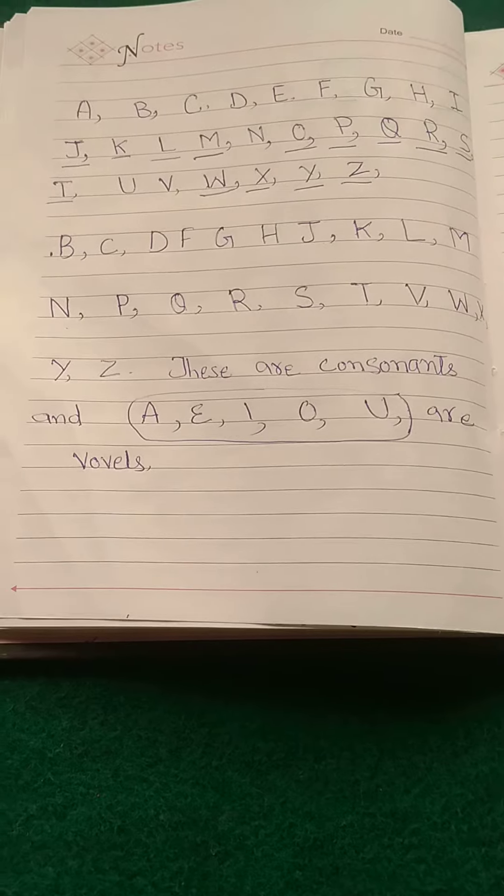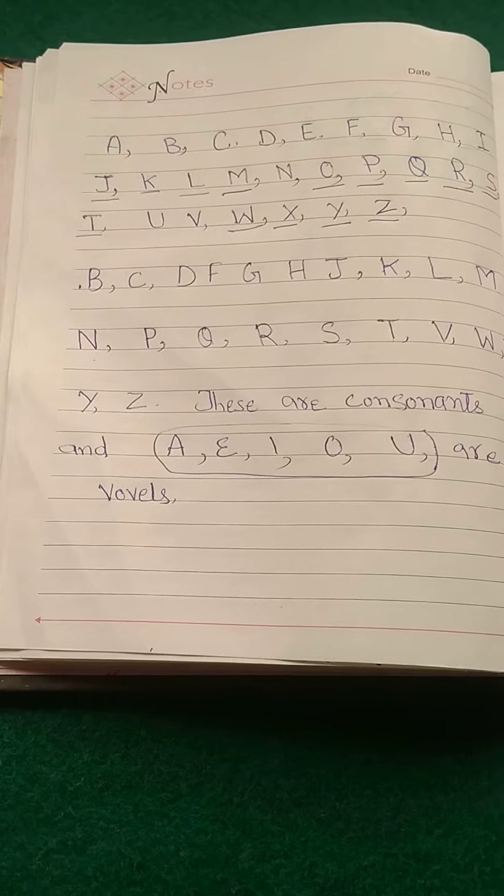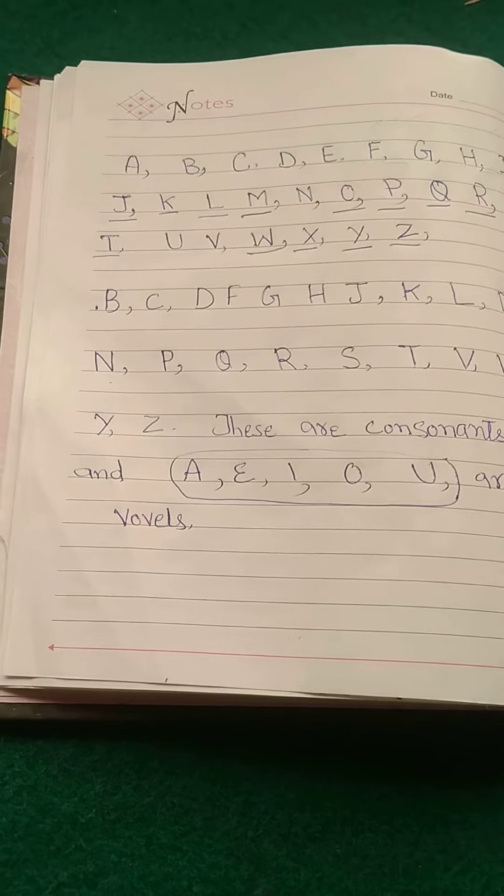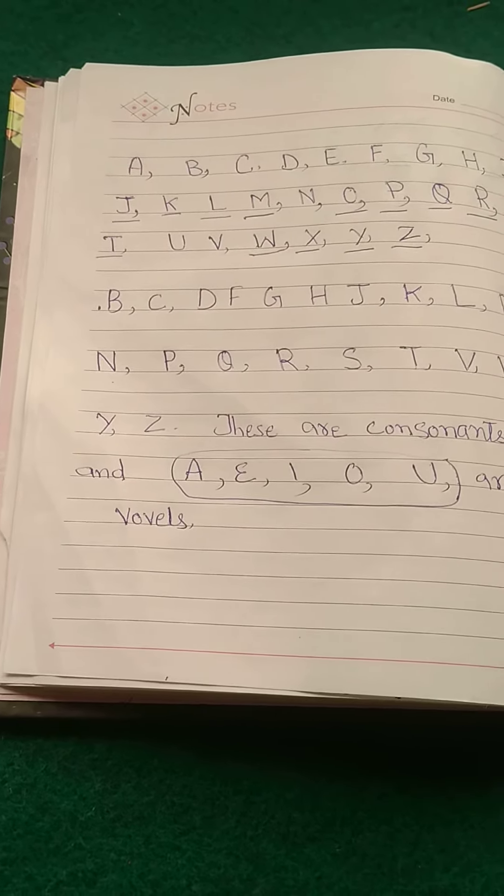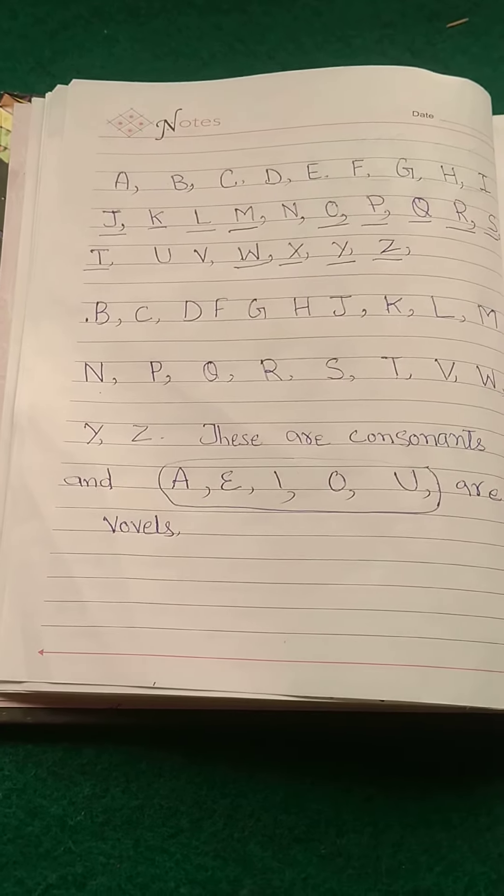प्यारे बच्चों, आज हम अंग्रेजी के हुरूफ पढ़ेंगे. अंग्रेजी के कुल 24 हुरूफ होते हैं, जिन मेंसे 21 को कांसोनेंट्स कहा जाता है.